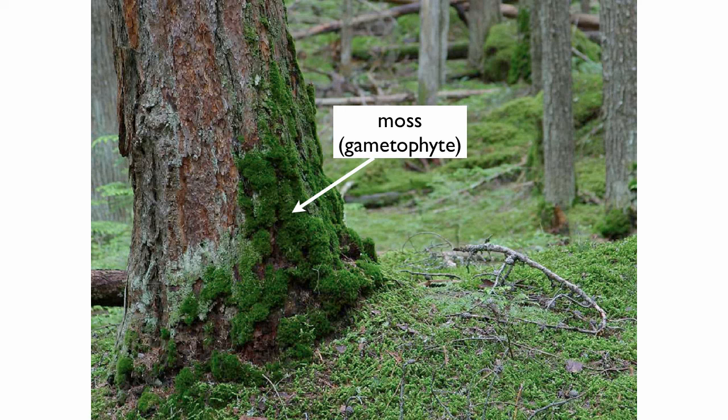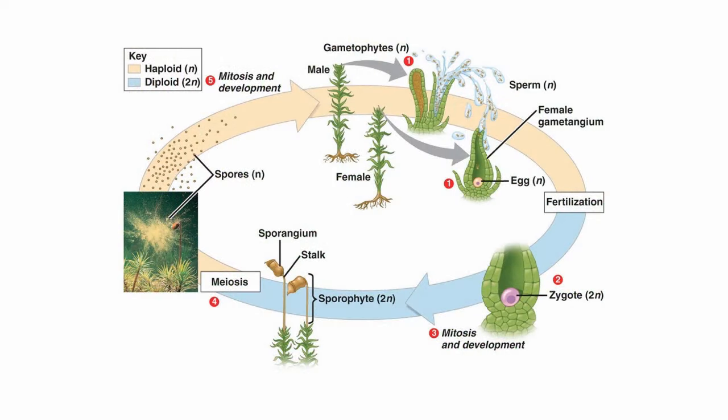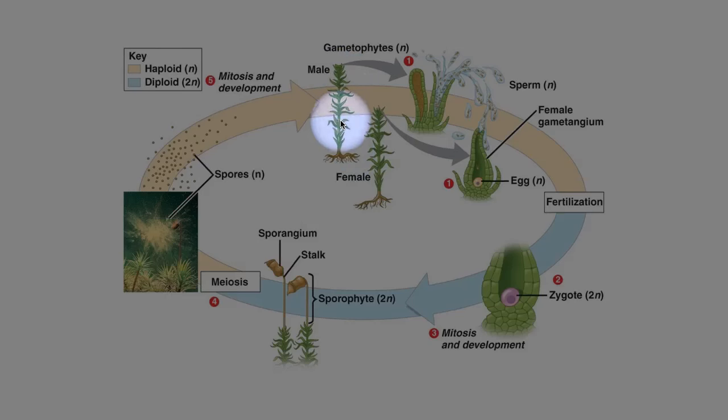With mosses, we have other less familiar plants like liverworts and hornworts. When you look at a moss, mosses grow in very moist places in the forest and things like that. They need a lot of water because mosses are non-vascular — they don't have any vascular fluid-carrying tissues. That also keeps the size of mosses very small. When you look at a moss, what you're looking at is actually the gametophyte stage.